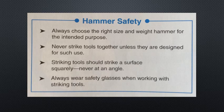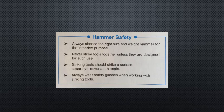Safety rules for hammers, summarized in figure 3-1: first, always choose the right size and weight hammer for the intended purpose; second, never strike tools together unless designed for such use; third, striking tools should strike a surface squarely, never at an angle; fourth, always wear safety glasses when working with striking tools. Also important to wear are safety or construction gloves, especially if you have experience striking your knuckles while hammering.